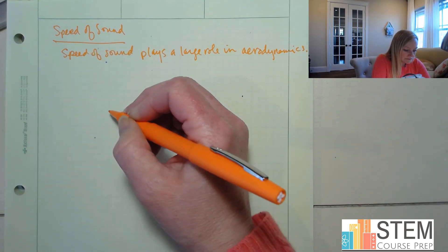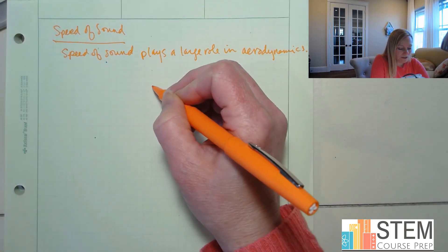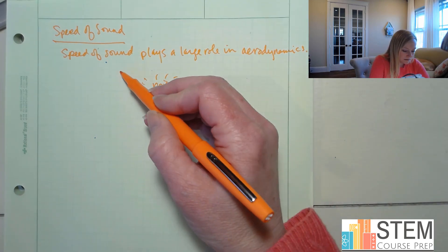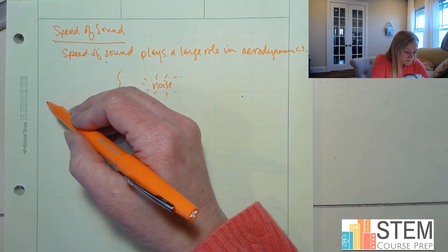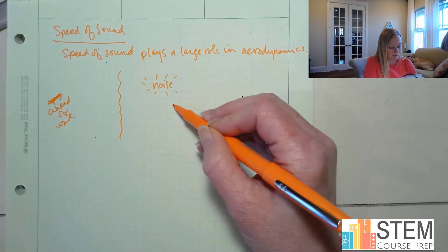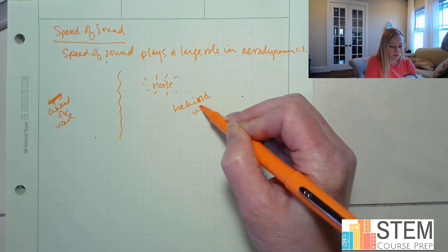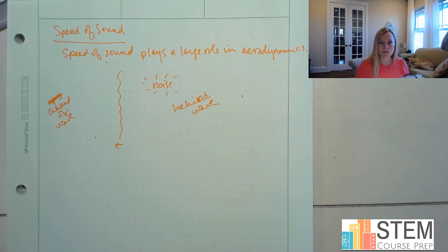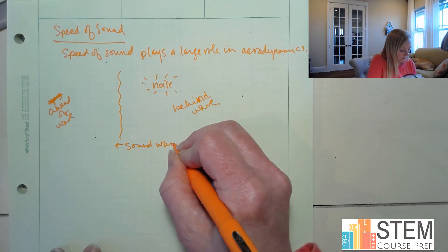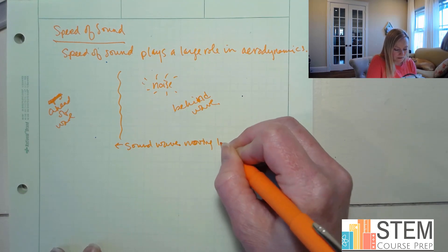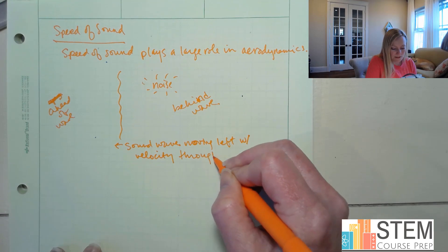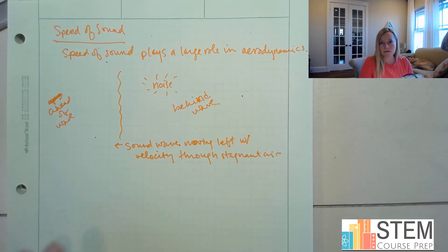So we're going to get our equation. First thing we're going to do is draw a little picture. We're going to have some noise — we make a noise, and that's going to create a wave. So we've got this sound wave. This is going to be ahead of the wave, and then this is behind the wave over here.